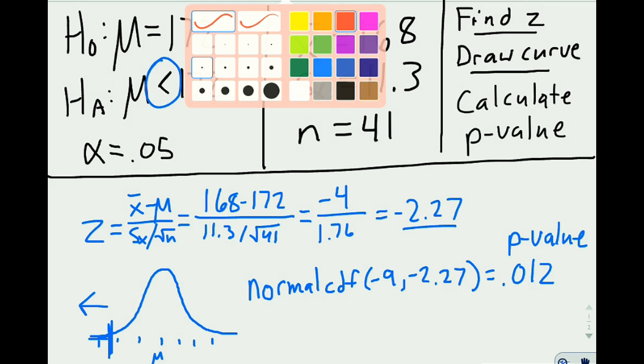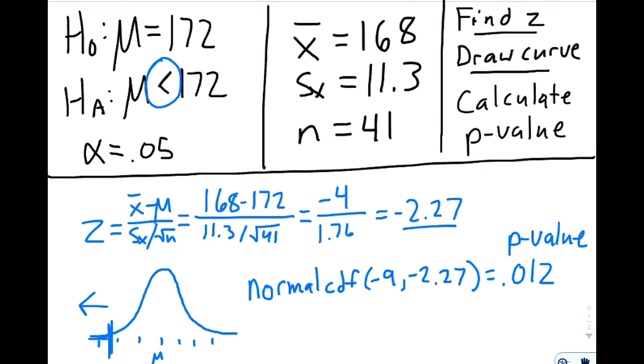If we were to keep going with this problem, since it is less than 0.05, we would reject. Our data is statistically significant. We accomplished what we set out to do, which is to prove that the mean of whatever the situation is, is less than 172.